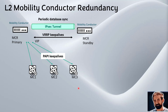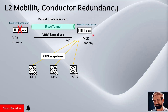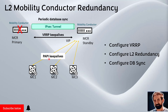In this video we will talk about Layer 2 mobility conductor redundancy. The mobility conductor is the device used to manage mobility controllers. These mobility controllers establish a PAPI tunnel to the primary mobility conductor, with a VRRP keep-alive and an IPsec tunnel where database synchronization securely happens. If the primary conductor goes down, the standby conductor takes over via a virtual IP address, with keep-alive messages moving from the failed conductor to the standby, which then becomes active.